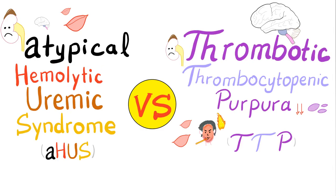It's Medicosis Perfectionaires where medicine makes perfect sense, and today we'll compare between atypical hemolytic uremic syndrome and thrombotic thrombocytopenic purpura. So let's get started.